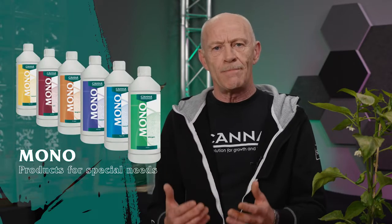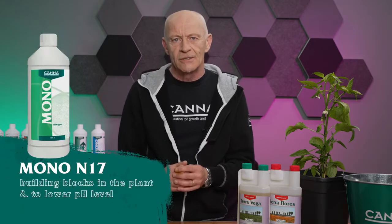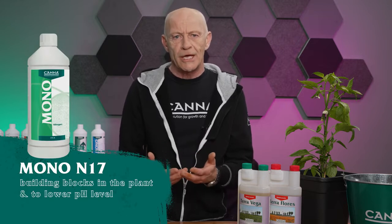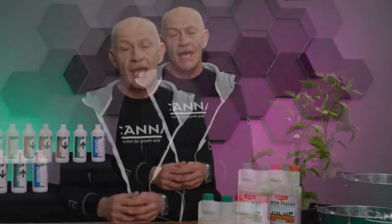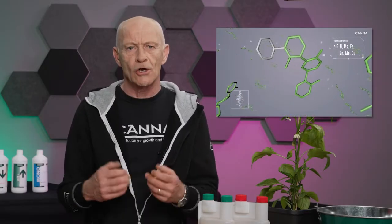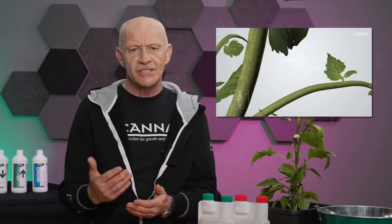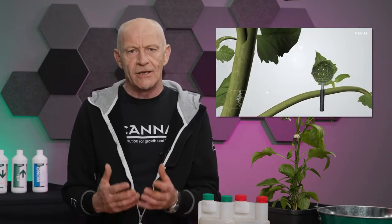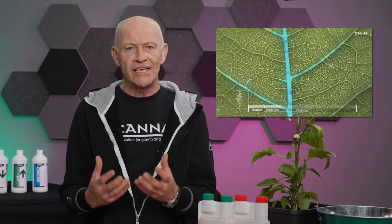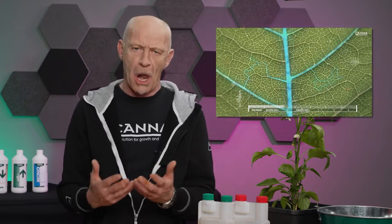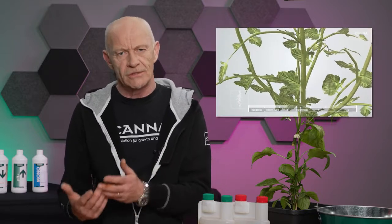Nevertheless, a grower can make mistakes, and to solve these mistakes we made special mono products like nitrogen. Nitrogen is a feeding element which is created to make building blocks in the plant, and one of those building blocks is the chlorophyll of the plant which makes the plant green. So a deficiency or excess in nitrogen you will see in the color of the plant — light green or even dark green.